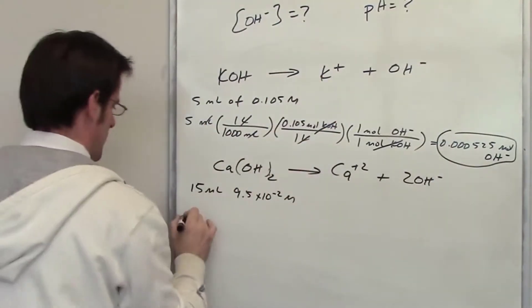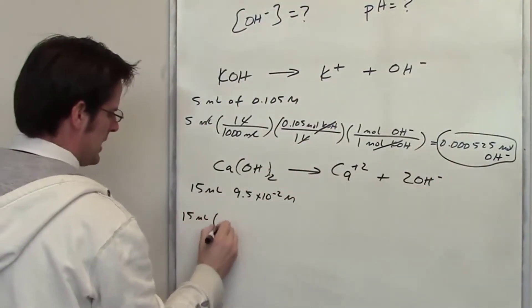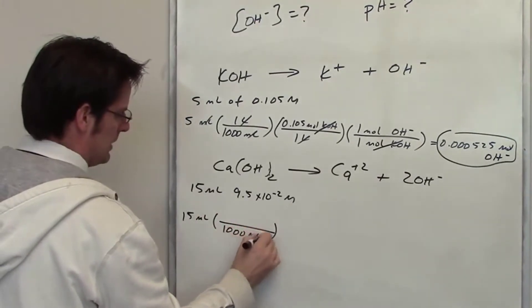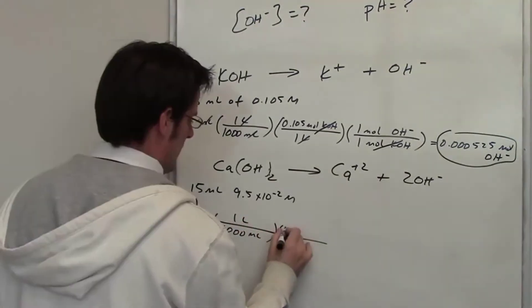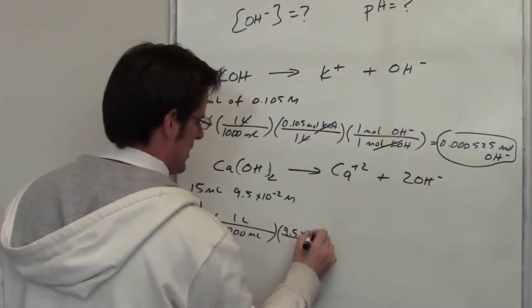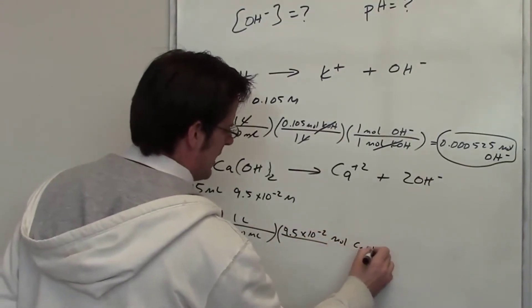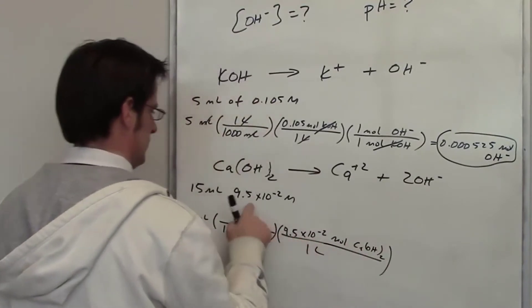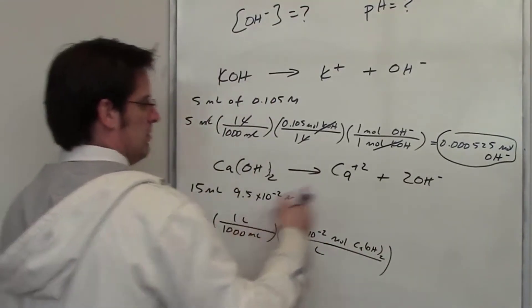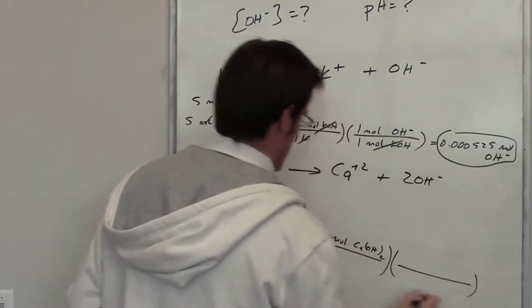Now we'll go down to this one. I've got 15 mL. I need to convert that to liters, so I'll go ahead and remember that there are 1,000 mL in one liter. I've got 9.5 times 10 to the negative 2 moles of KOH in one liter. That's the concentration of this thing. How many moles of hydroxide is that going to end up being?